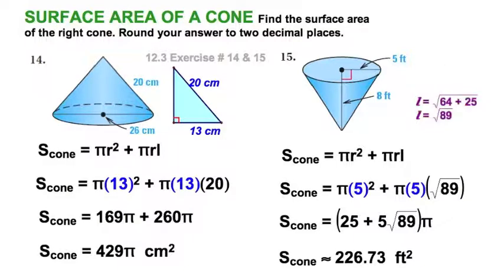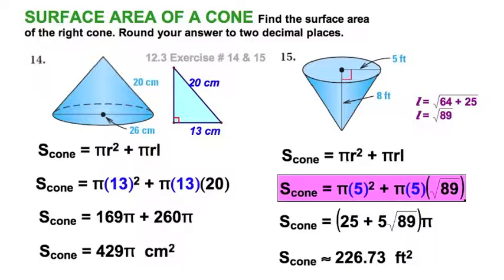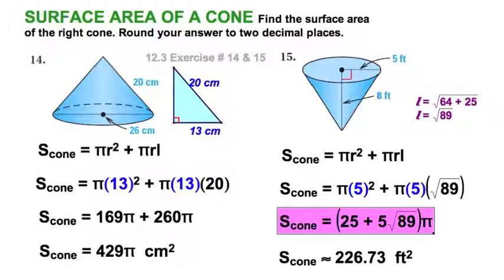This time what's missing is the slant height. The slant height is clearly some radical value — radical 89. I know you'll be eager to put that in a decimal, but hang on for a second. Let's just go through the equation. We've got this, and we perform our substitution. I'm going to factor out the pi, so I've got 25 plus 5 radical 89, times pi.